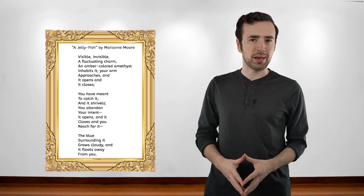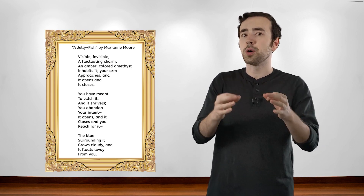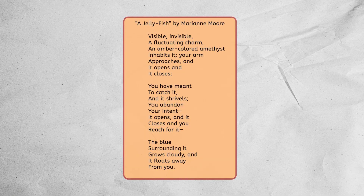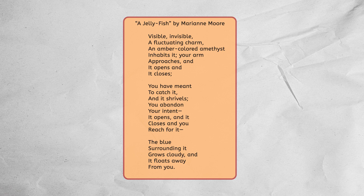Now, let's take a look at that poem again. This time, let's see if we can connect an emotion to it. "Visible, invisible, a fluctuating charm. An amber-colored amethyst inhabits it. Your arm approaches and it opens and it closes. You have meant to catch it and it shrivels. You abandon your intent. It opens and it closes and you reach for it. The blue surrounding it grows cloudy and it floats away from you."